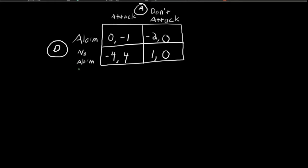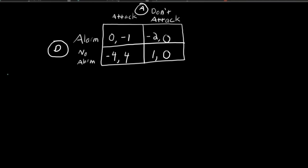I'll leave this as an exercise, but it's easy to show that there is no pure strategy Nash equilibrium in this game. However, what we're going to do in this lesson is find the mixed strategy Nash equilibrium. We're going to let P be the probability that the attacker attacks. From the lessons on mixed strategy Nash equilibrium, for P to be an equilibrium, the defender needs to be indifferent between sounding an alarm and not sounding an alarm.